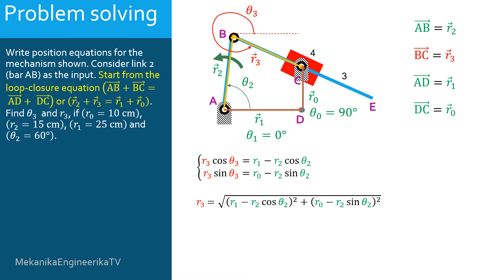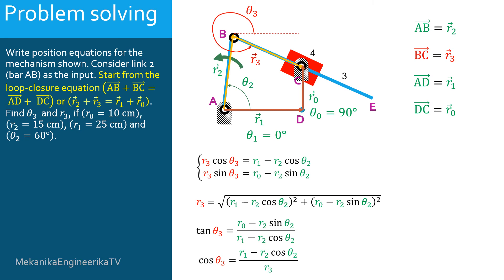To get the modulus R3, we square the two equations, then add them, then take the square root. R3 is then equal to the square root of the sum of the square of R1 minus R2 cosine theta 2, and the square of R0 minus R2 sine theta 2. It is also possible to get tangent of theta 3 by dividing the second equation by the first. Thus, tangent of theta 3 equals R0 minus R2 sine theta 2, divided by R1 minus R2 cosine theta 2. To use arctangent we need to know if cosine theta 3 is positive or negative. Cosine theta 3 can be calculated from the first equation: cosine theta 3 equals R1 minus R2 cosine theta 2 divided by R3.